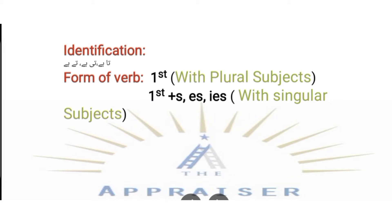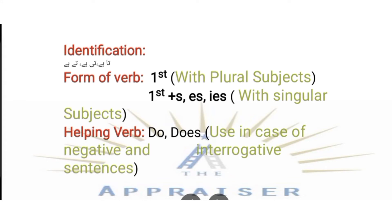The helping verbs used in the Present Indefinite Tense are 'do' and 'does.' We use one helping verb according to the subject. 'Do' is used with plural subjects, and 'does' is used with singular subjects.